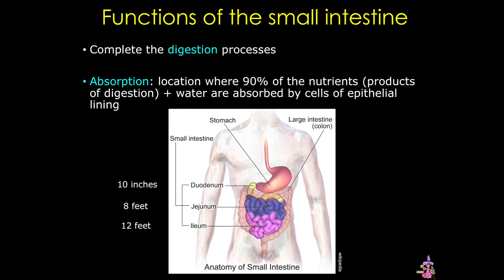The primary function of the small intestine is to complete the digestive processes initiated in the mouth and continued in the stomach. In addition, the small intestine is the site where most of the digested food is absorbed. Enzymes produced in the intestinal mucosa and the pancreas, along with emulsifying bile produced in the liver, enable the uptake of protein, carbohydrates, and lipid components.